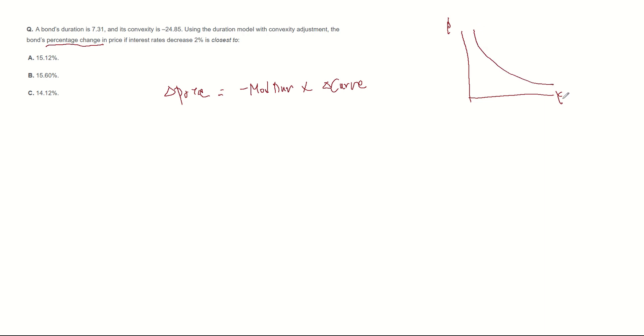So especially when yield change is not small, convexity adjustment is necessary to estimate more accurate bond price. In addition to duration effect, now we need to adjust for convexity effect with the formula: 0.5 multiplied by convexity multiplied by yield change squared. Now let's plug in the numbers.